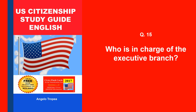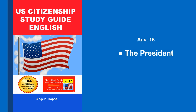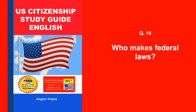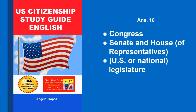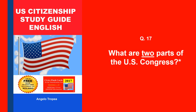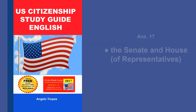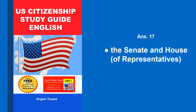Who is in charge of the executive branch? The president. Who makes federal laws? Congress, Senate and House of Representatives, U.S. or National Legislature. What are two parts of the U.S. Congress? The Senate and House of Representatives.